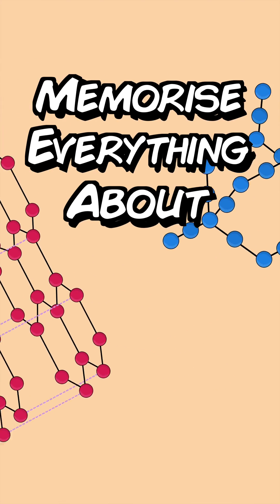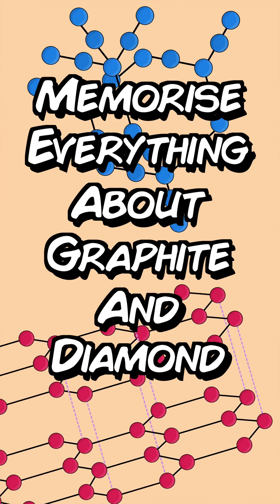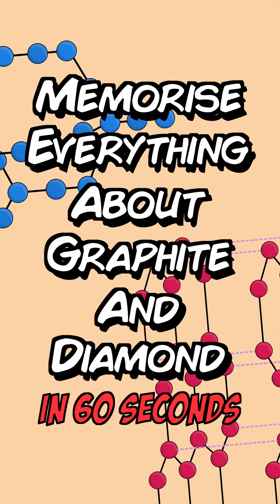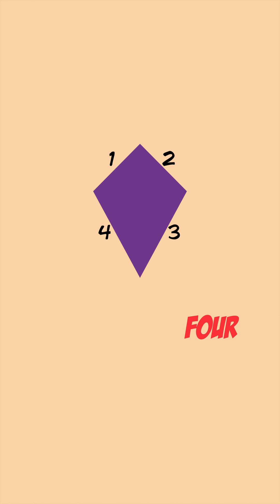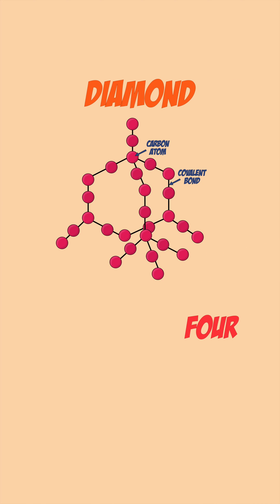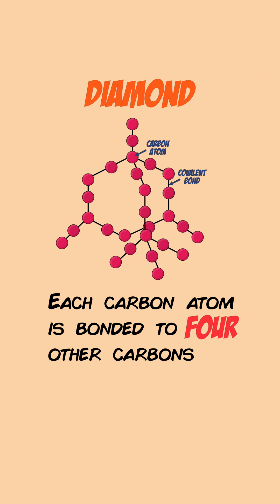Here's how to memorize everything about graphite and diamond in 60 seconds. A simple diamond has four sides, which reminds you that in diamond, each carbon atom forms four covalent bonds with other carbon atoms.